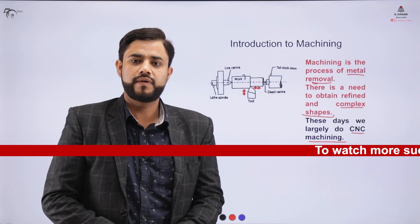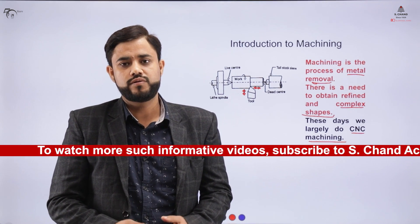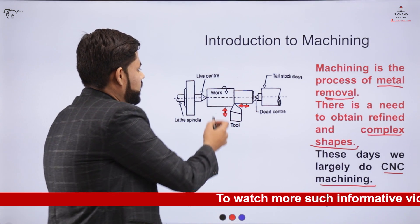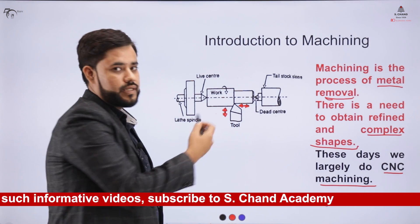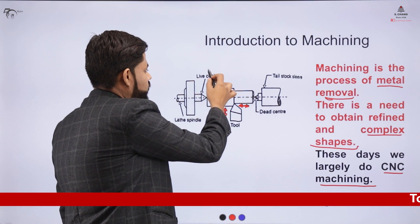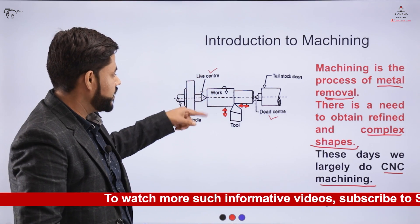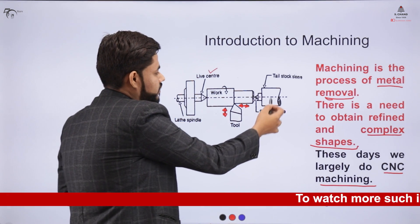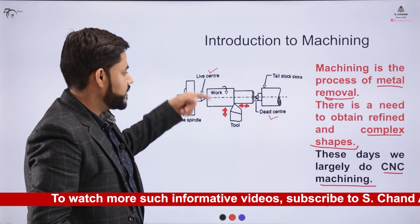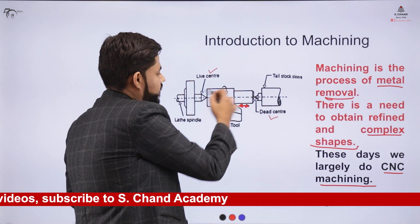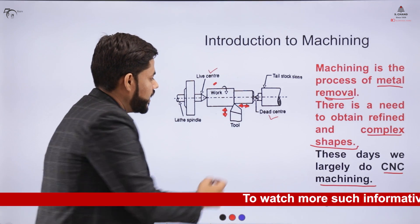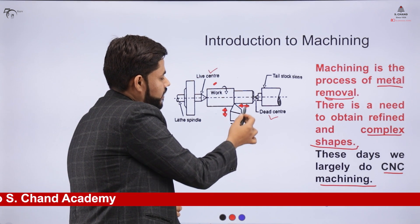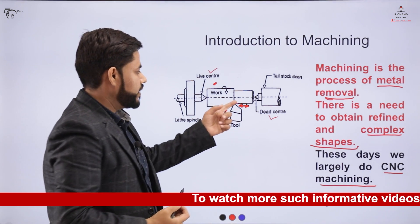Now let us come to the introduction of the machining process. In the diagram, you can see a workpiece fitted inside a chuck on a lathe machine, held between two centers: the live center, where the workpiece rotates, and the dead center, which does not rotate. The workpiece keeps rotating while a single-point tool is inserted to a certain depth of cut. A linear motion is then provided to the tool so that metal removal takes place and the metal is removed in the form of chips.